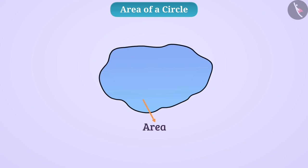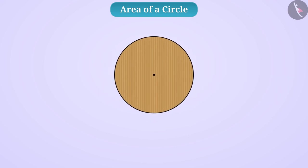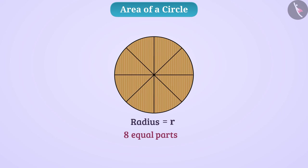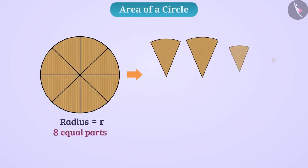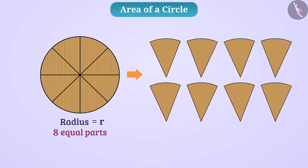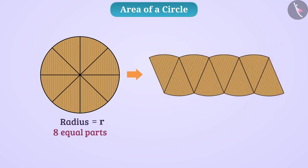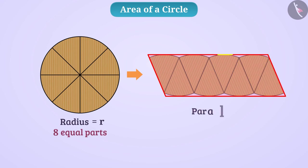Let us find the area of a circle by an activity. Suppose we have taken a circle of cardboard with radius R. First, we will divide this circle into 8 equal parts. Now we will cut these parts and separate them, then arrange them. From this, we will get a shape like a parallelogram.